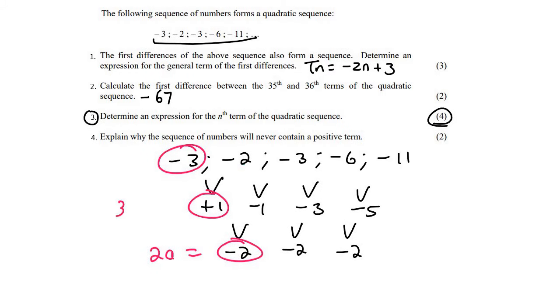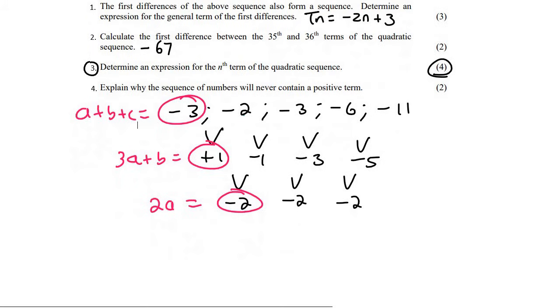Then remember what we normally do here. We circle these first three numbers, and we make these three formulas. 2A, 3A plus B, and then A plus B plus C. Okay, so now it's just a matter of solving that. Remember, this is how we always do our quadratics. And so we start with the first one down here, which says that 2A is equal to minus two. Therefore, A would be equal to negative one.